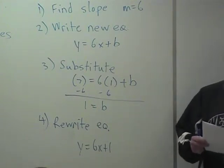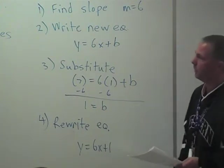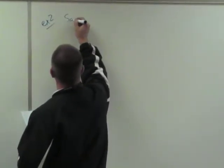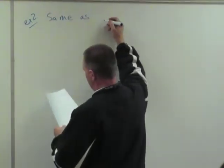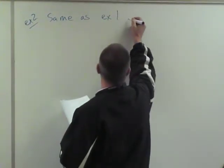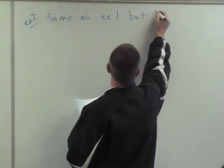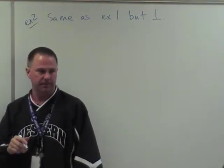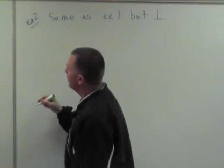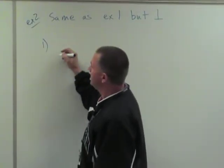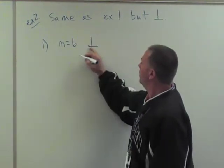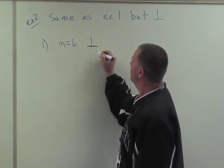All right, so let's find an example two, which is a perpendicular line. So example two, same as example one, except I want you to find the equation of a line that's perpendicular to that line. Okay, so step one is already done. The slope of that line was six, but what do we know about perpendicular slopes?